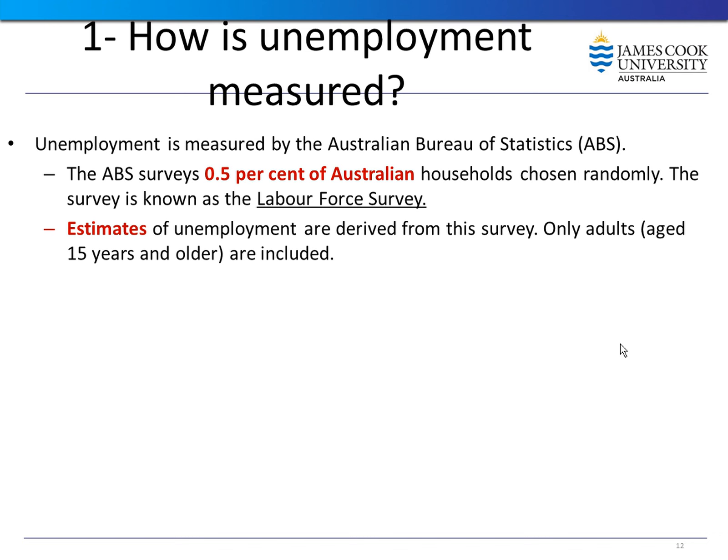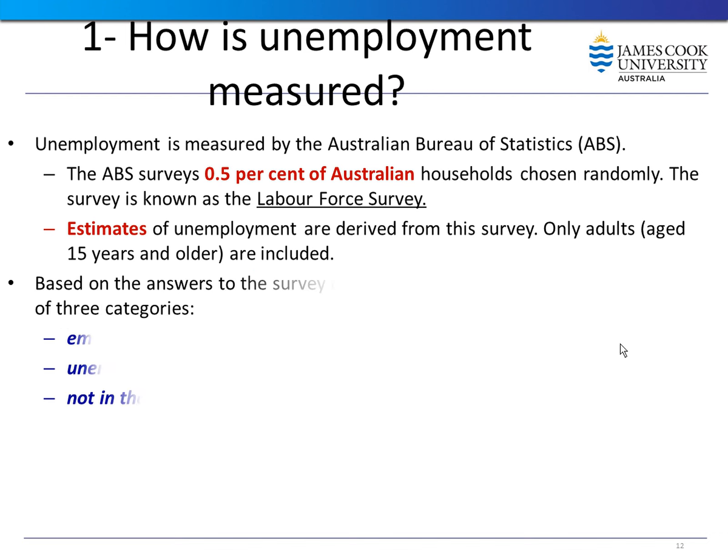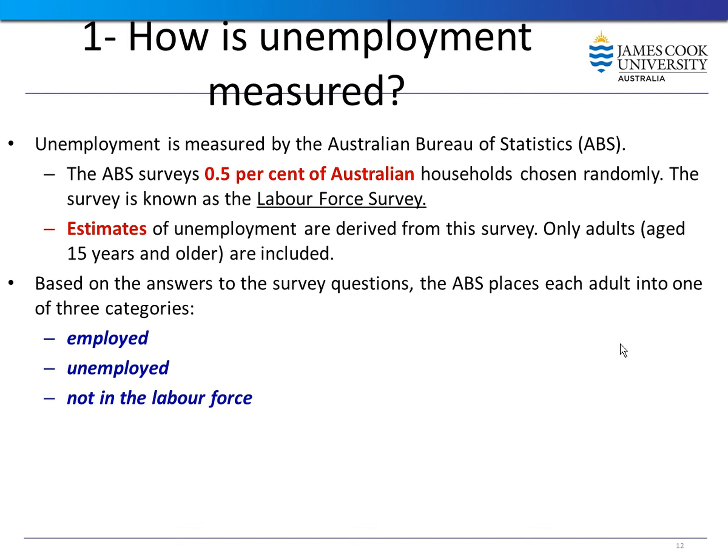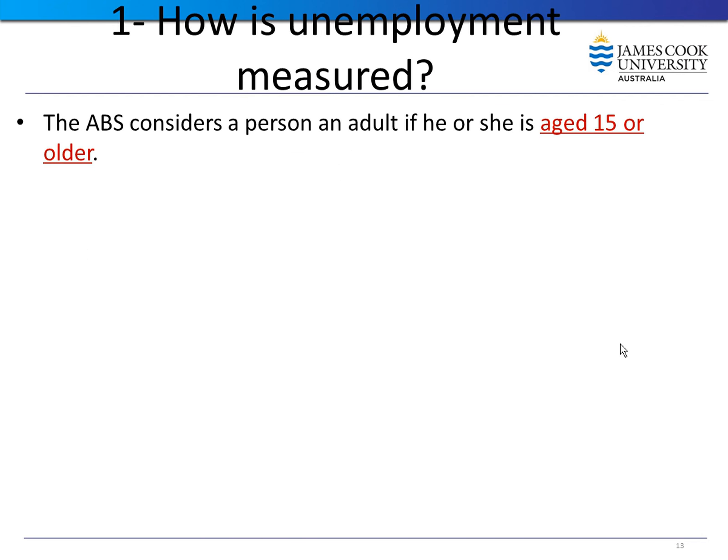The ABS — Australian Bureau of Statistics — is responsible for measuring unemployment. What ABS does is survey 0.5 percent of Australian households chosen randomly, in a survey known as the Labour Force Survey. Only adults aged 15 years and older are included. They ask: did you have at least one hour of paid work in the previous week? If yes, you are employed. If no, they ask if you are waiting for or looking for a job; if no, you are out of the labor force; otherwise you are counted as unemployed.